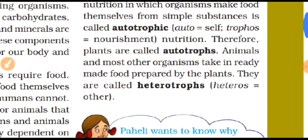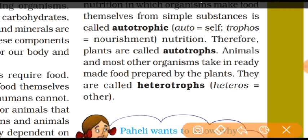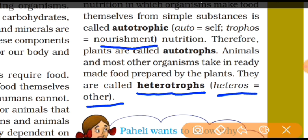Animals and most other organisms take ready-made food prepared by plants. So they are called heterotrophs. Heteros means other, and trophs means nourishment. In heterotrophic nutrition, animals and human beings use food prepared by others.